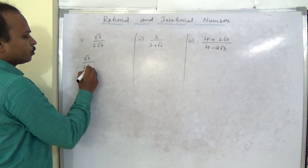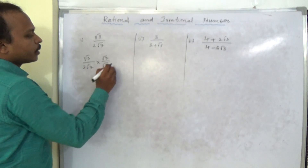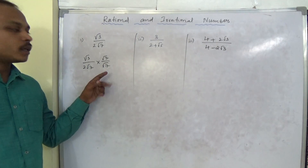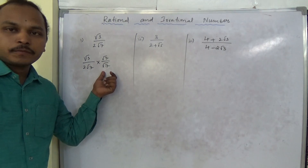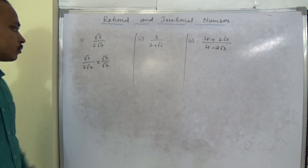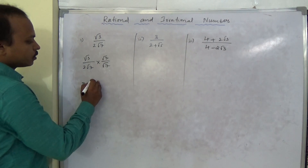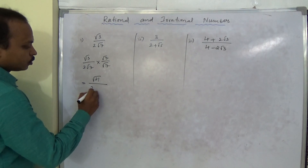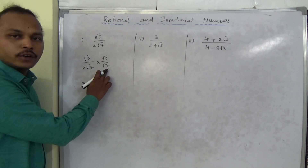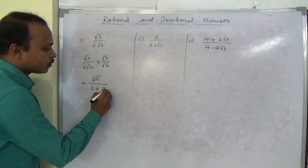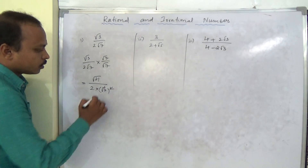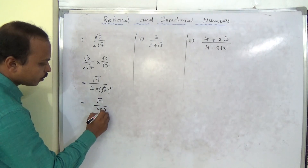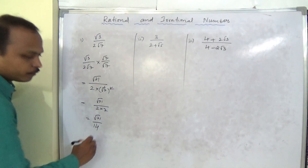So we have √3 by 2√7, multiplied by √7 by √7, because √7 is the rationalizing factor for the same number. This gives √3 × √7 = √21 in the numerator. In the denominator, 2 × √7 × √7 — the square root cancels — giving 2 × 7 = 14. So the answer is √21 by 14.